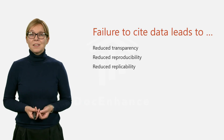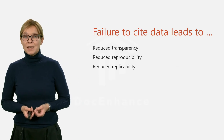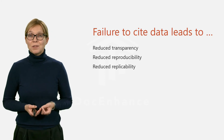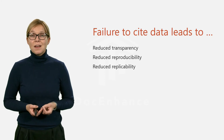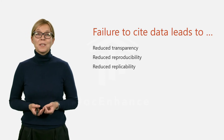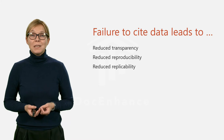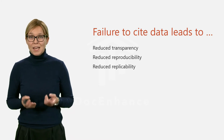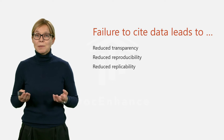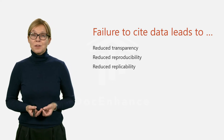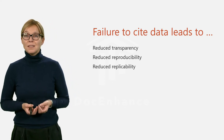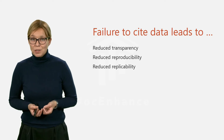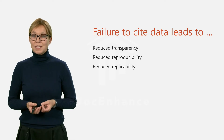The failure to cite data properly in publications is worrying because it reduces the transparency of the research and, as a consequence, also its reproducibility and replicability. I want to stop here for a moment and explain these three terms, because you need to understand these in order to understand the overarching goal of good research data management.